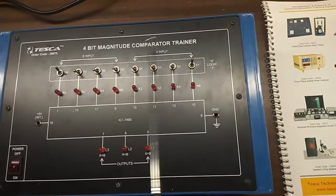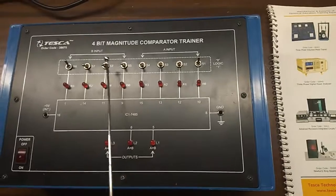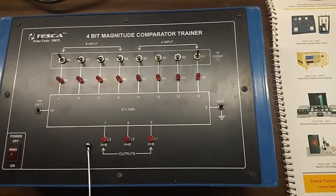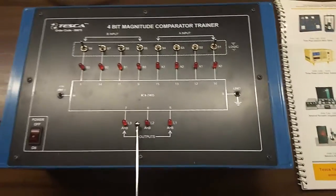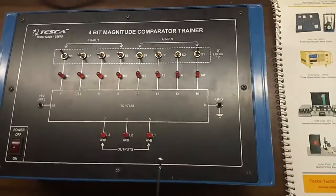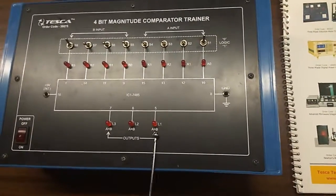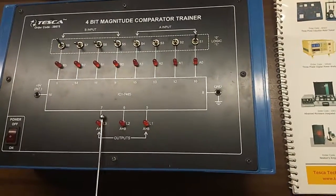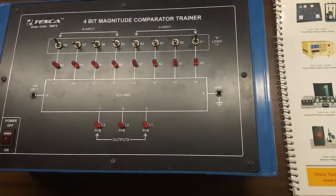These are the A inputs, S1 to S4, and these are the B inputs, S5 to S8. This is the output section. There are three LEDs to indicate the status of the output: L1 shows A greater than B, L2 shows A equals B, and L3 shows A less than B.